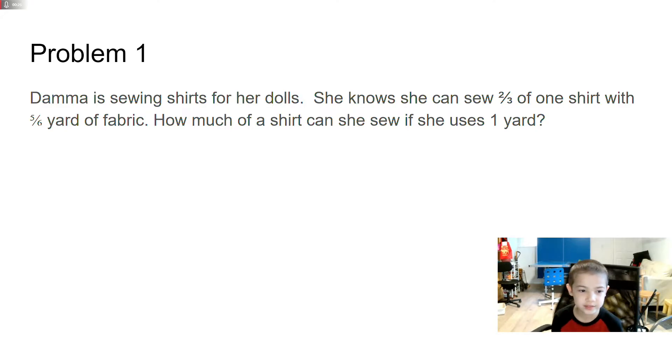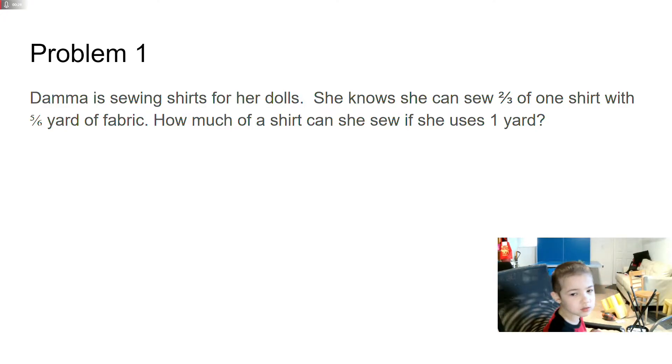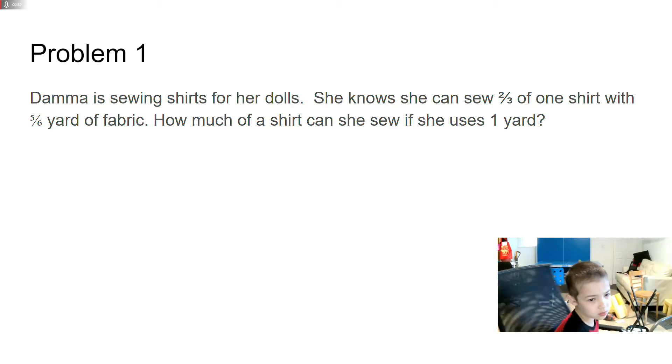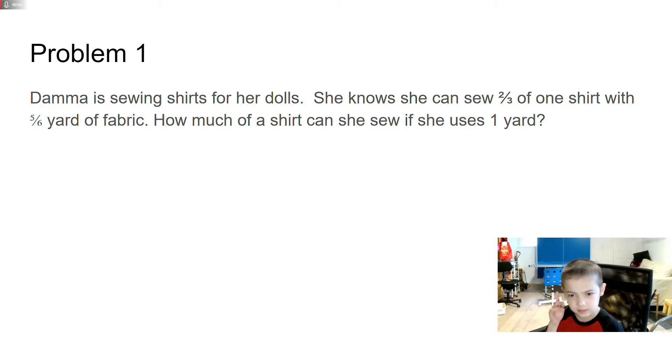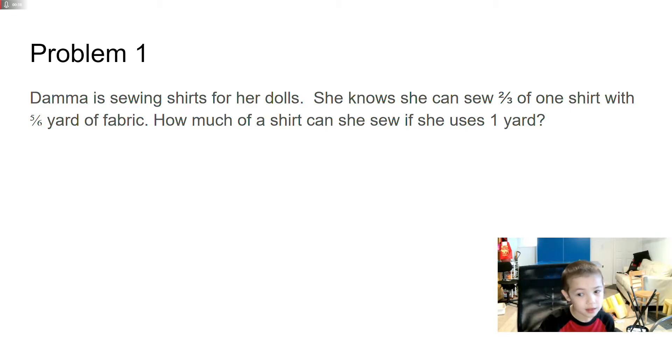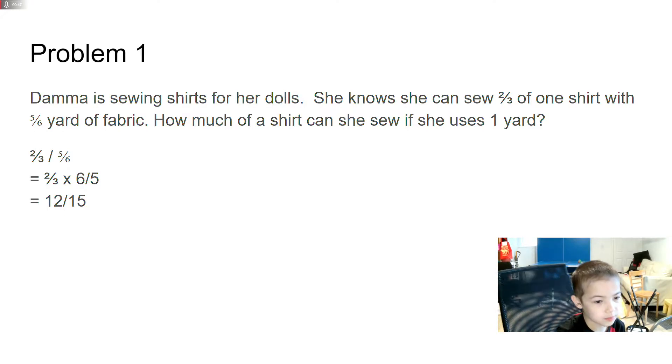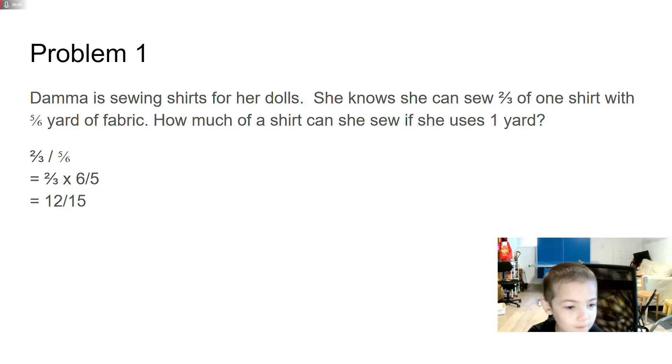So 2 over 3 is a factor of 5 over 6. So if she sews 2 over 3 of 1 shirt, we're going to do 5 over 6. To get that, you want to do 2 over 3 times 5 over 6, and we divide by 5 over 6. The reciprocal of 5 over 6 is 6 over 5, and that equals 2 over 5.